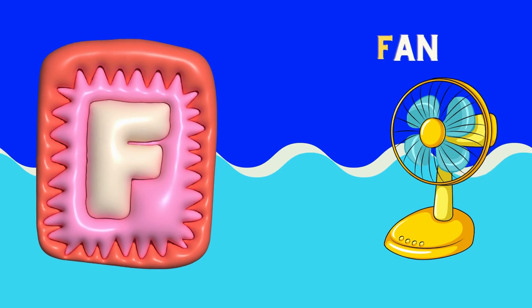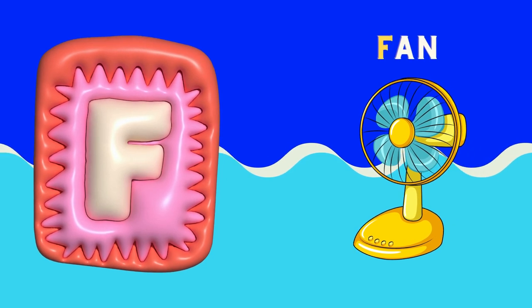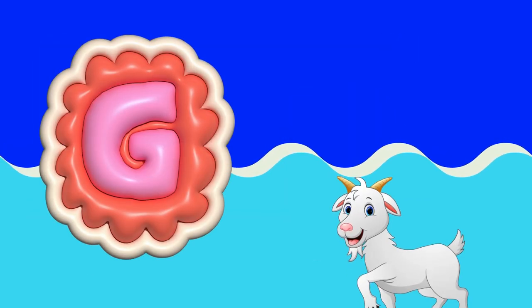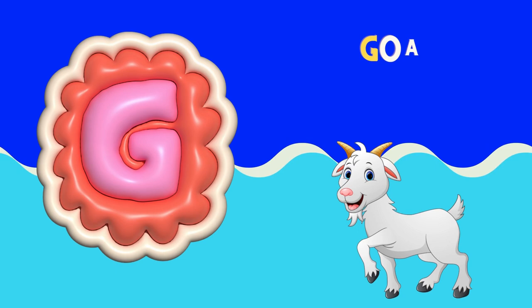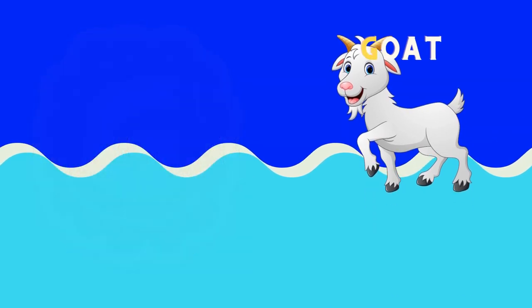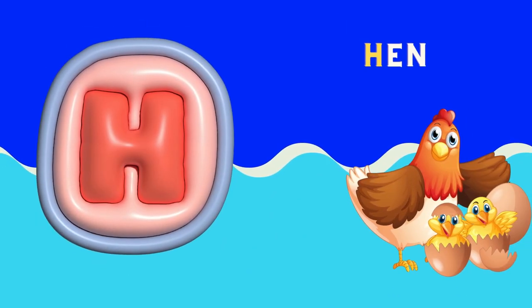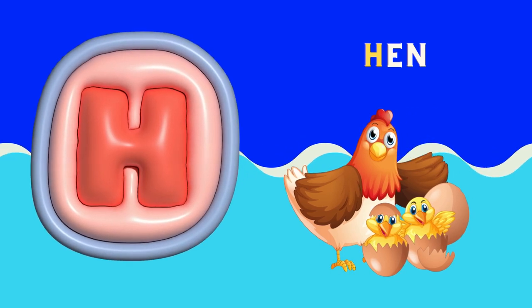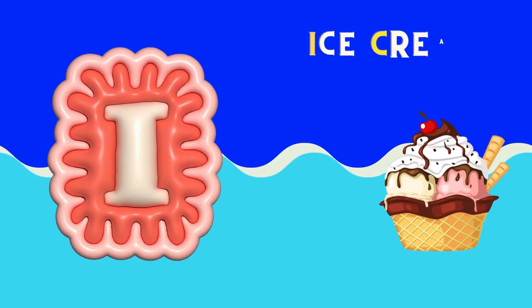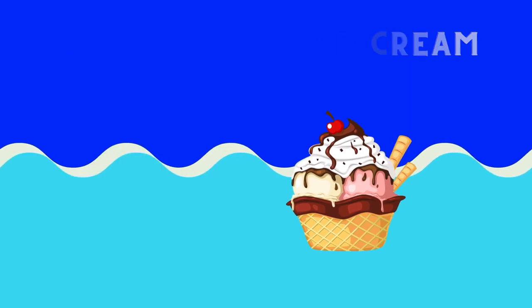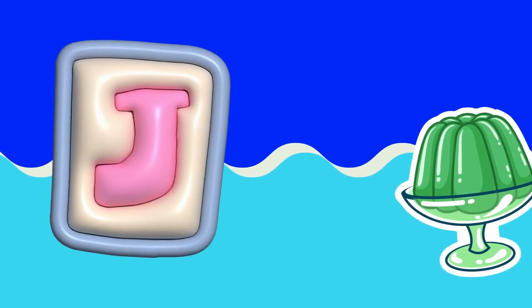F is for fan, G is for goat, H is for hen, I is for ice cream, J is for jelly.